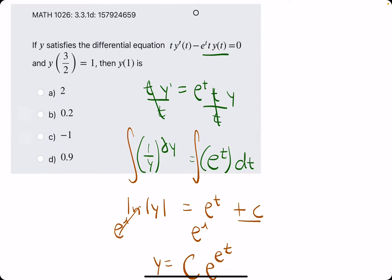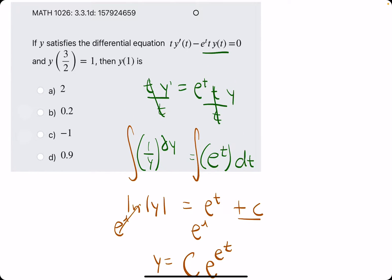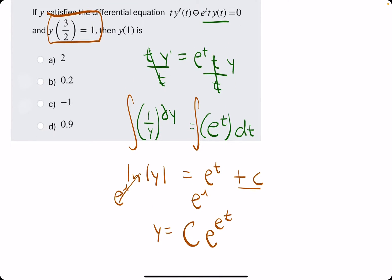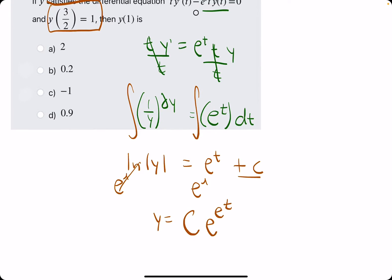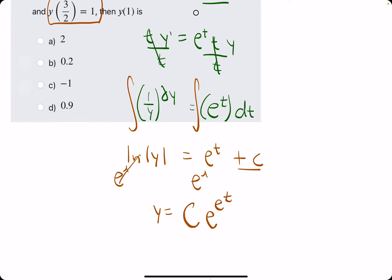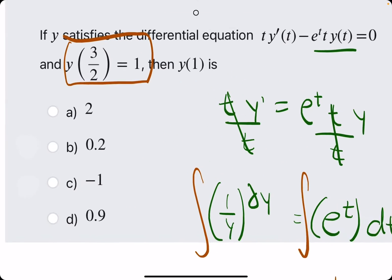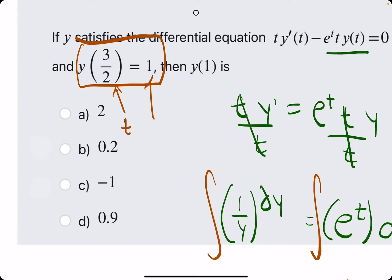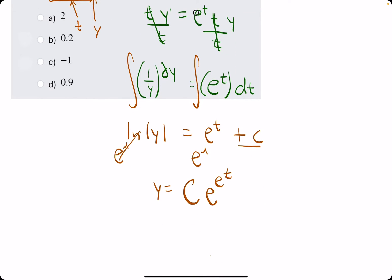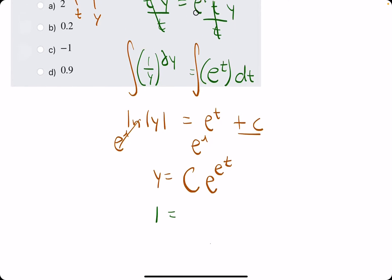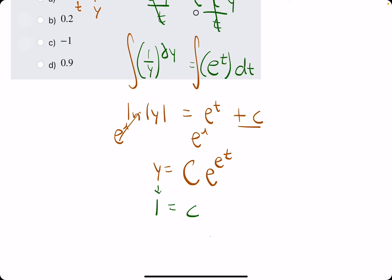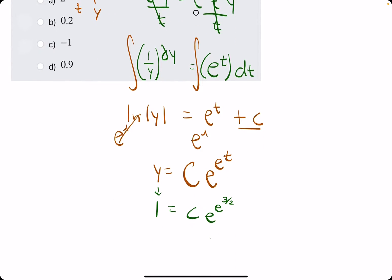All right, let's see what's next. We have the condition that is, I guess it's not an initial condition, but it's some, you know, pair, ordered pair for t and y. So t is 3 over 2, and y is 1. So we're going to plug those values in, respectively. So 1 is y, and then we have c, e, raised to the e to the 3 over 2 for our t value.